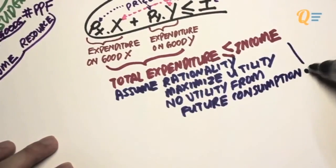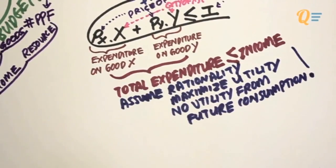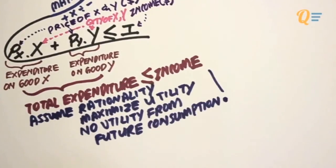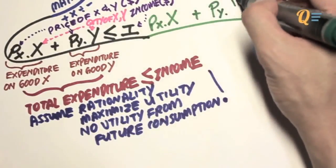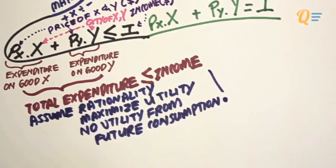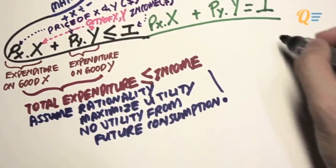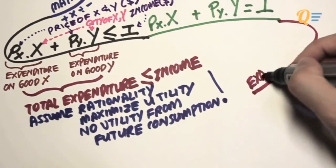With these few assumptions in place, we can safely say that the individual will spend all of his or her income. Therefore, you get the budget constraint that looks like this. So instead of a less than or equal to sign, I just changed it to an equal sign.